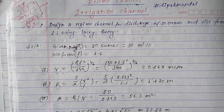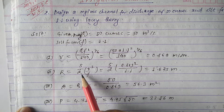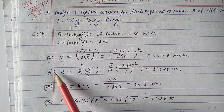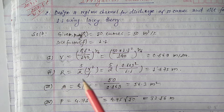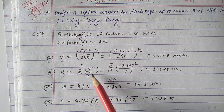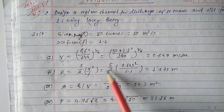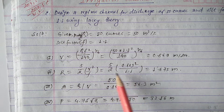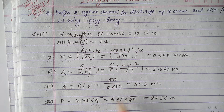This completes Step 1. Step 2 — find hydraulic radius R = (5/2)·(V²/f). We already calculated V = 0.869 m/s, so substituting V = 0.869 and f = 1.1: R = (5/2) × (0.869²/1.1), which gives R = 1.675 m.